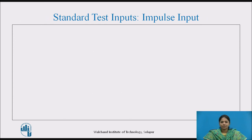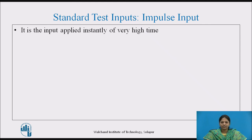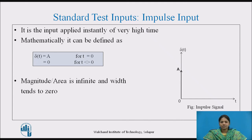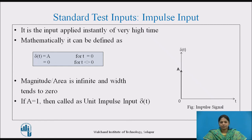The next standard test input is the impulse input. It is an input applied instantaneously for a short duration of time with very high amplitude, as shown in the figure. Mathematically, it is defined as R(t) = A for t = 0, and R(t) = 0 for t ≠ 0. It is a pulse whose magnitude is infinite while its width tends to zero, so the area of the impulse is its magnitude. If A = 1, it is called the unit impulse function, denoted as δ(t). The Laplace transform of this input is 1.